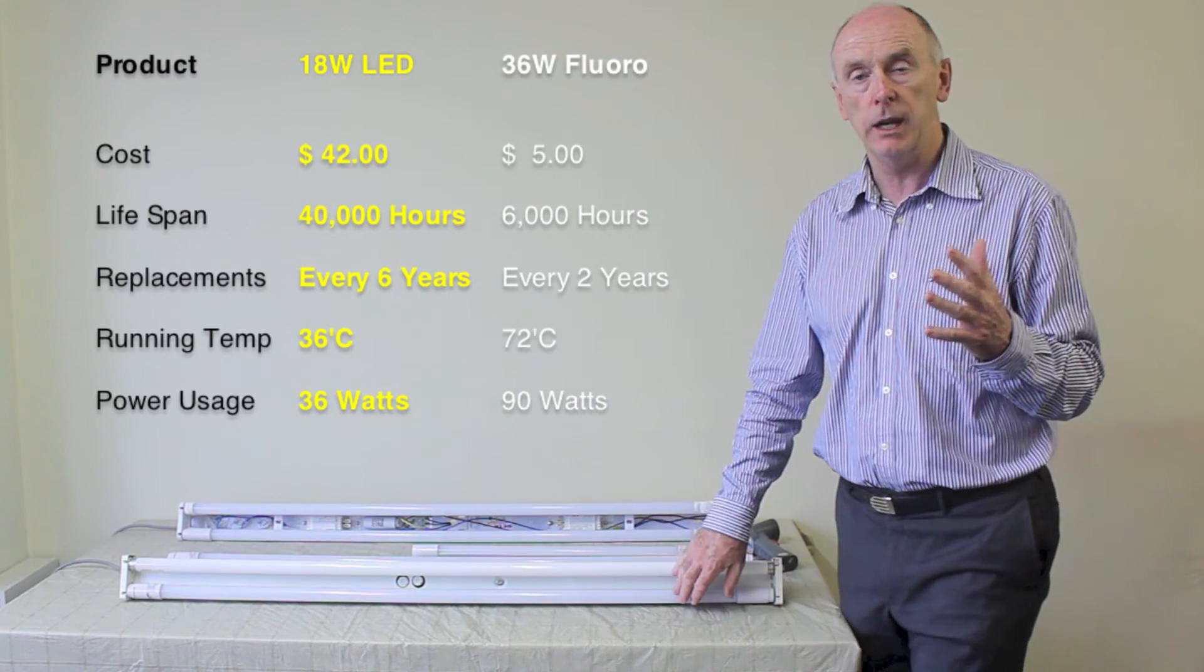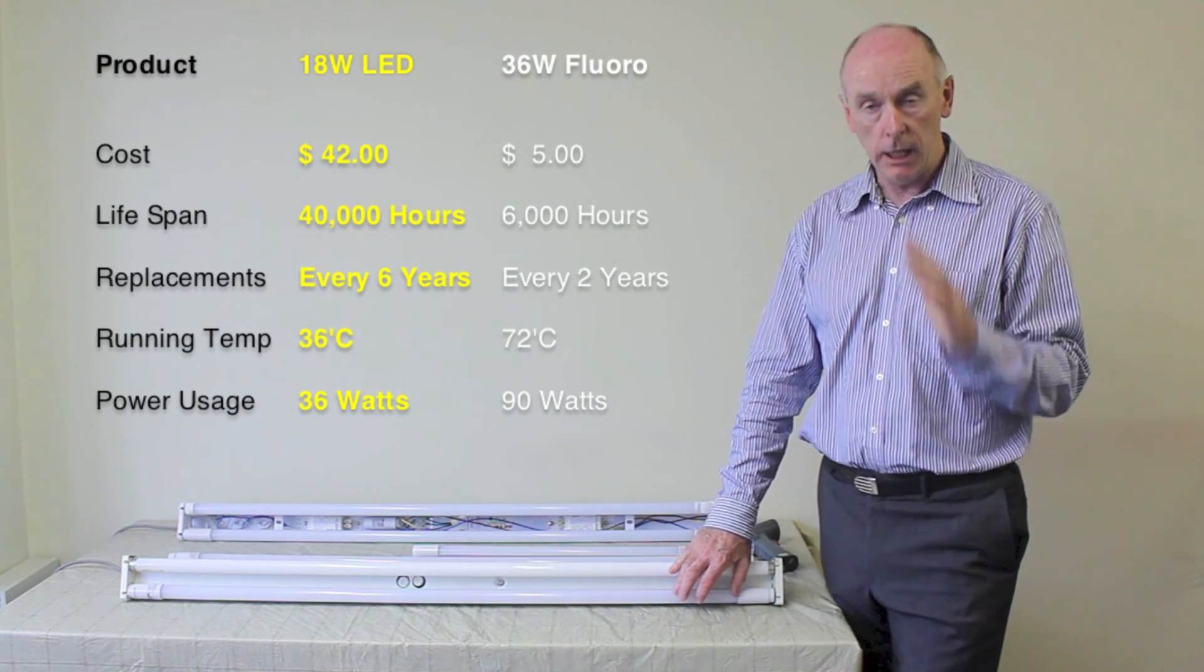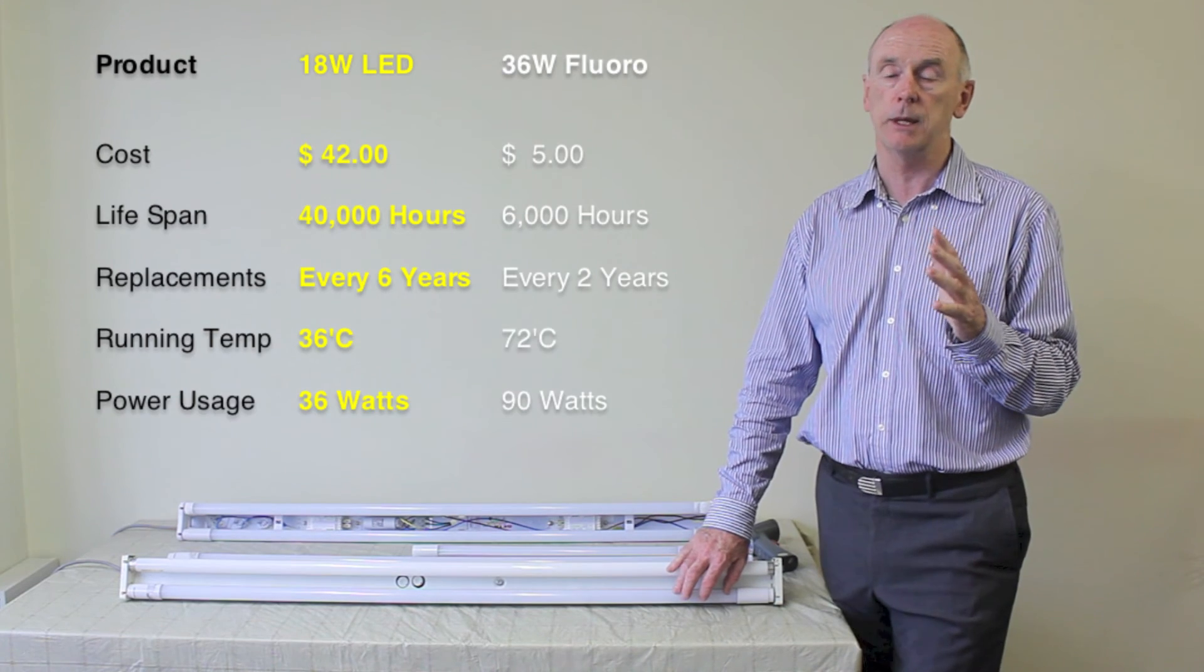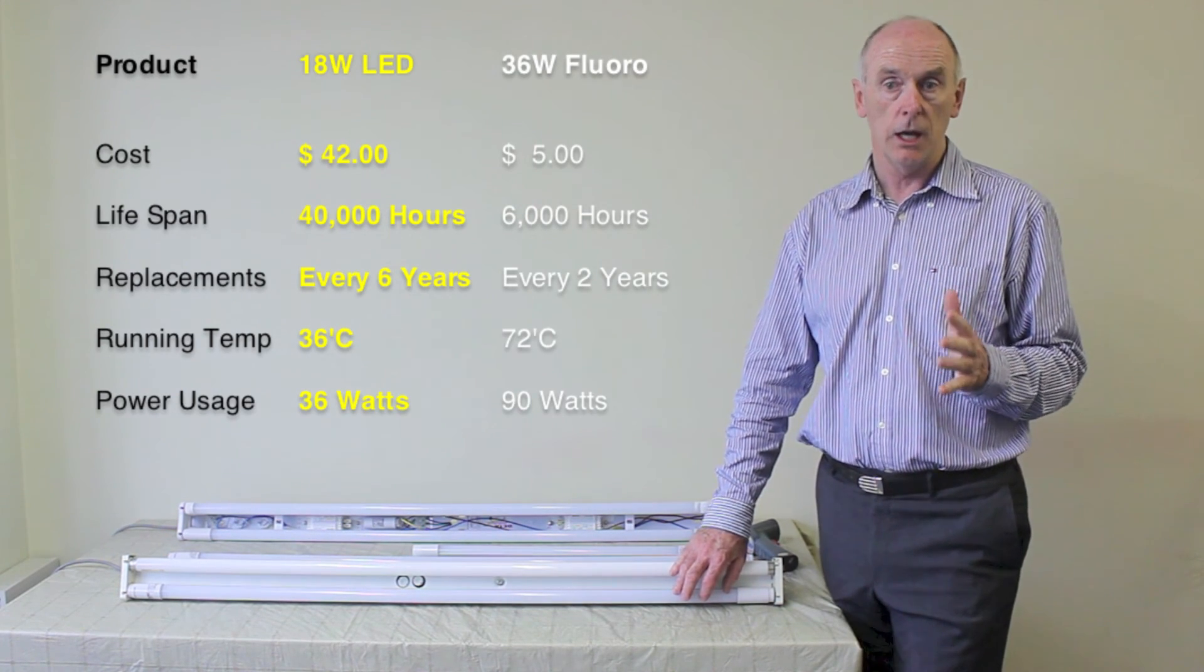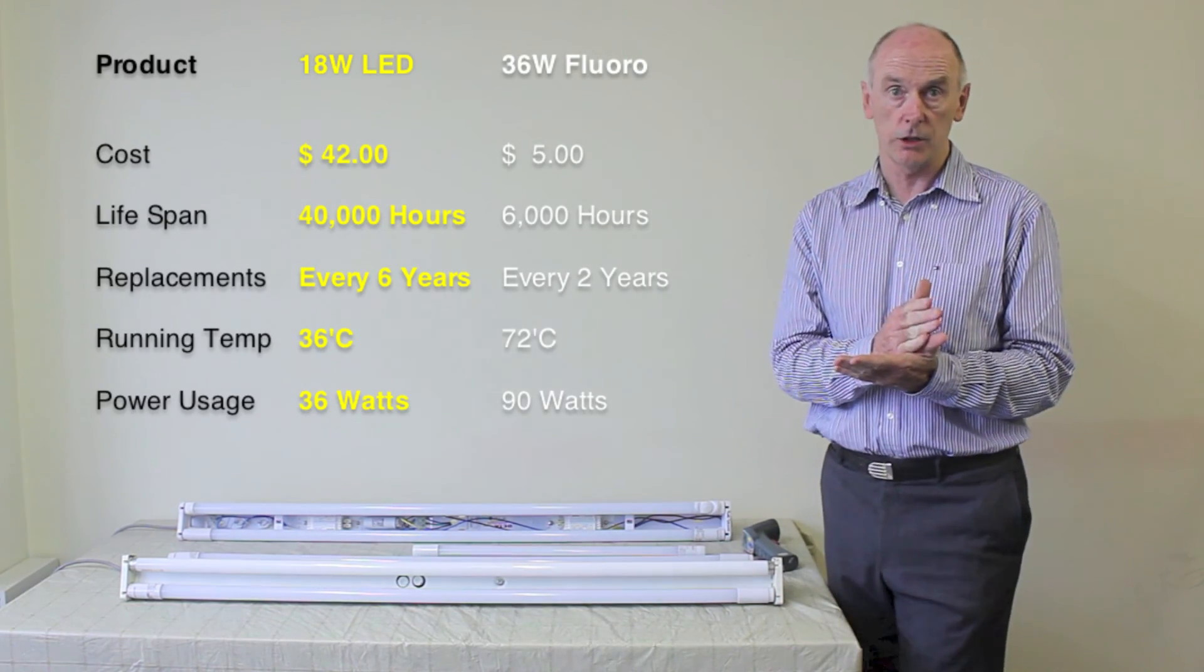In a double fitting, which is 1200 millimeters long with an LED tube, you're only pulling approximately 30, 36 watts, 37 watts. So you're going from 90 watts down to 36 watts. That's a big energy reduction.